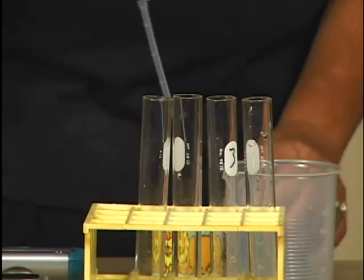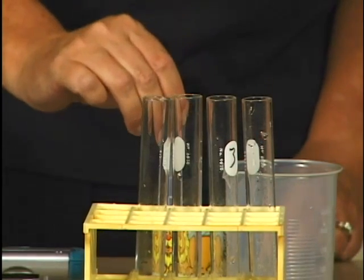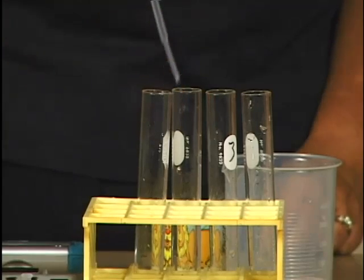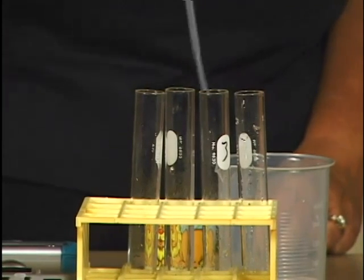Similarly, add three milliliters of three percent hydrogen peroxide to each of the test tubes in your rack.